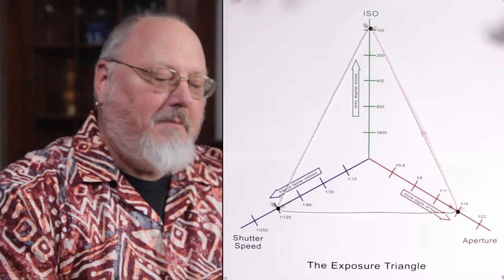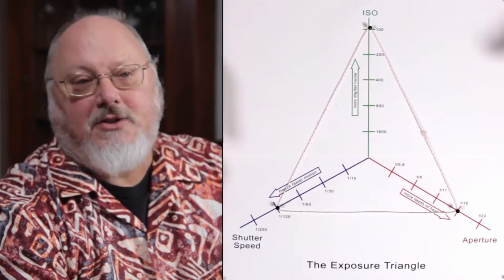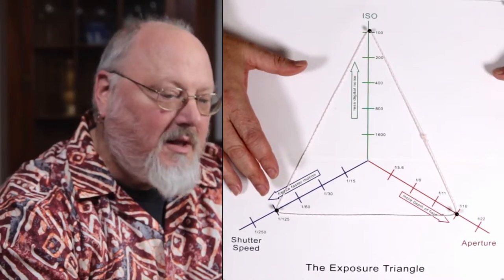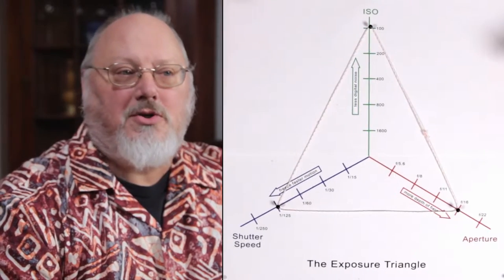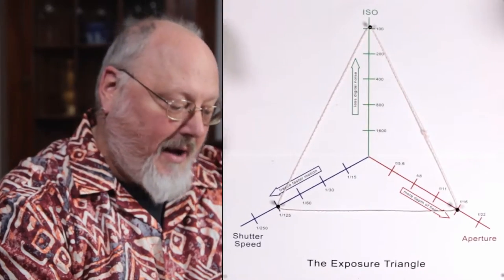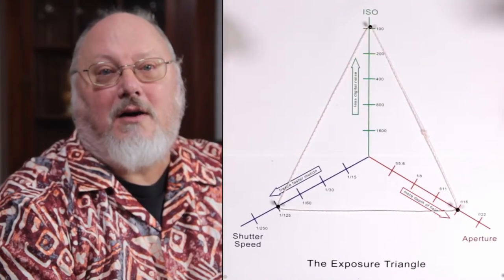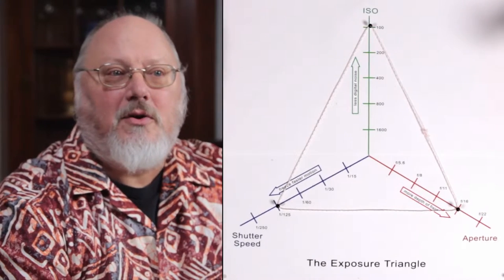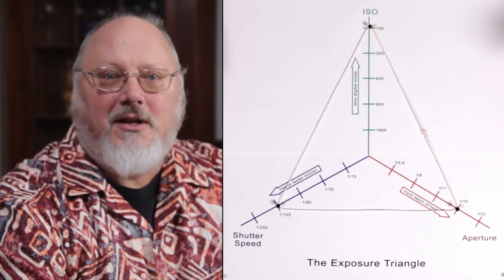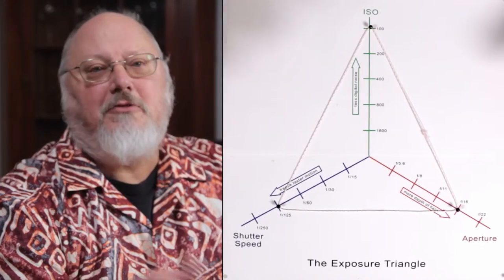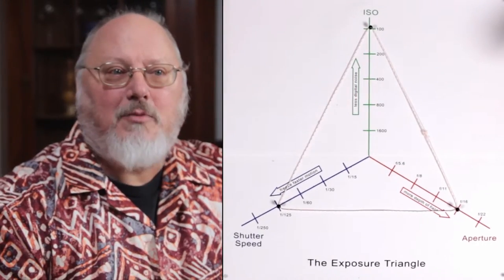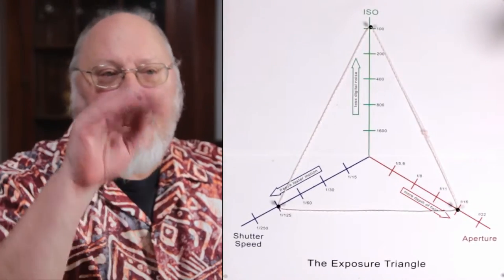So when you're adjusting this in your camera, the camera has several different controls. It has the shutter speed, the aperture, and the ISO all available. And when you look through the viewfinder, the camera also has a built-in light meter. And when you look through the viewfinder, you'll see, for example, on a Canon camera, there's a scale in the middle, the bottom of the viewfinder, that shows a negative two, negative one, zero, plus one, plus two.